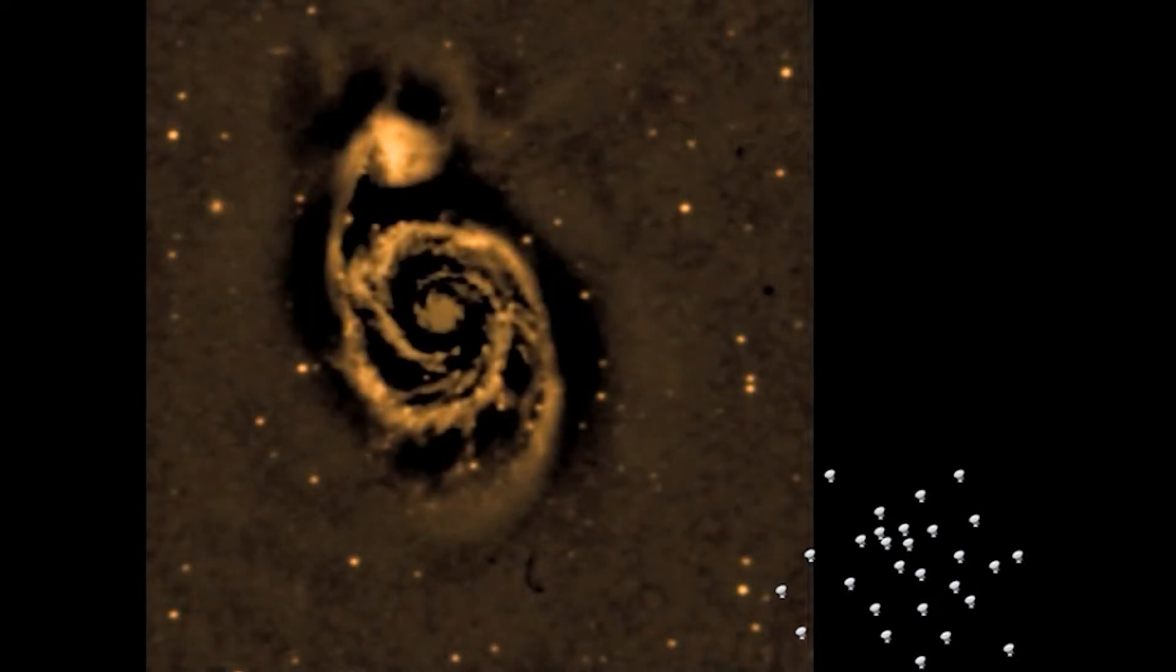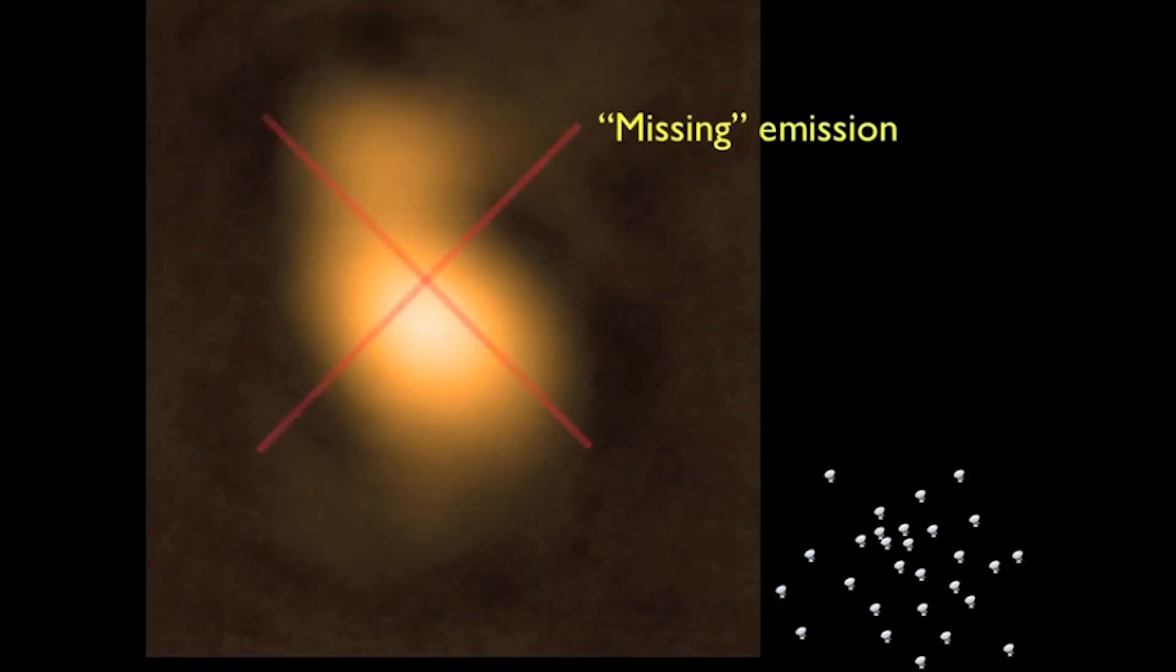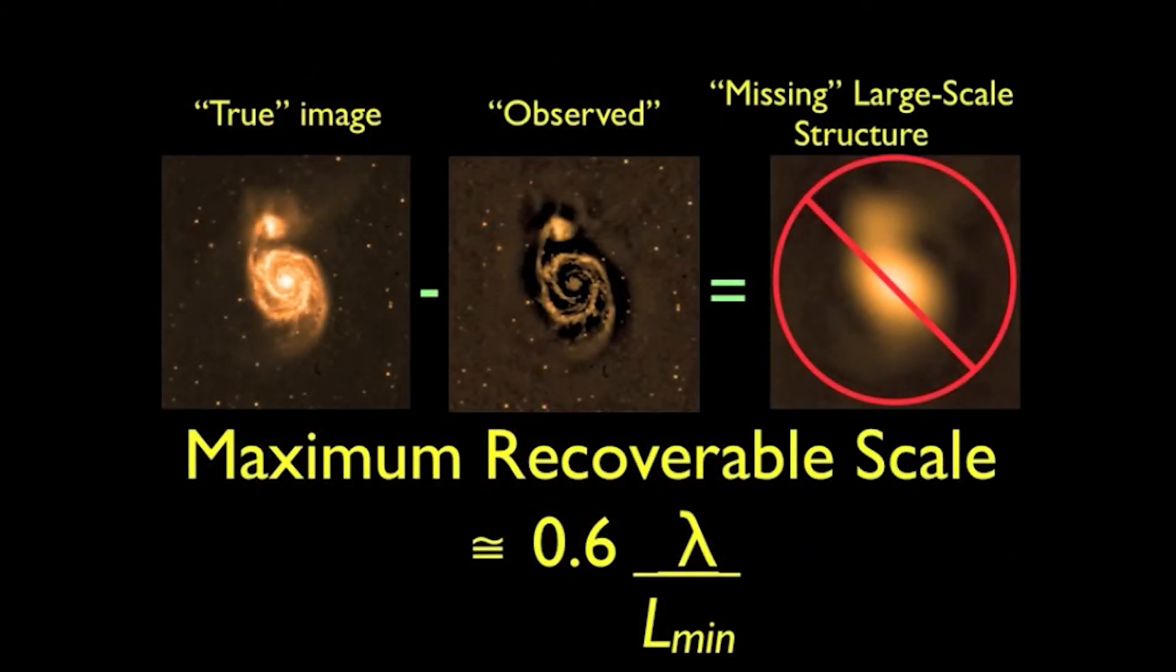Now, here's a simulated ALMA image. Notice the difference. If we subtract the observed image from the true sky image, we see those parts of the image that are missing because of the maximum recoverable scale issue. There is no information in the observed image about structures larger than this maximum recoverable scale.